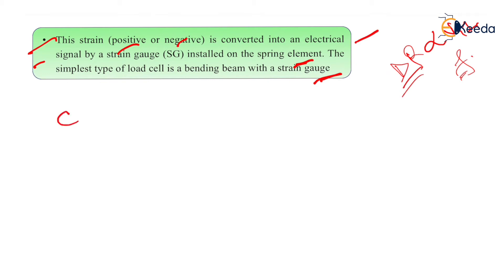The capacitive type of load cell works on the change in capacitance, which is the ability of a system to hold a certain amount of charges when voltage is applied. Capacitance is proportional to the amount of overlap of plates and inversely proportional to the gap between the plates.